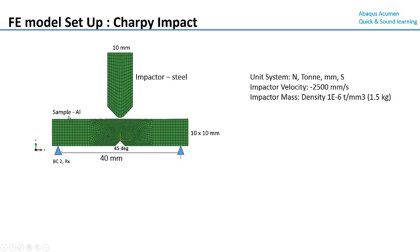The sample material is aluminum and the unit system is Newton, ton, millimeter, and second. I am applying an impactor velocity of approximately 2500 mm/s and the impactor mass is around 1.5 kg. This mass is represented by manipulating the density of the steel impactor material - the modulus properties remain steel but the density is changed to represent 1.5 kg. Ultimately we want to apply the kinetic energy as the initial energy, which is converted from the potential energy calculation of the Charpy impact test setup.